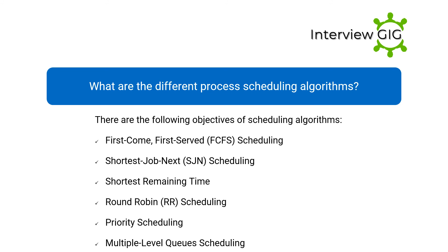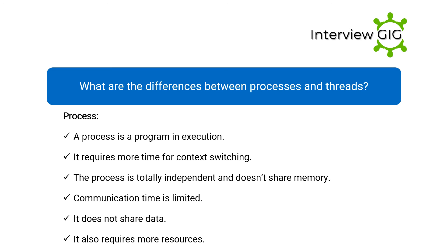What are the different process scheduling algorithms? The scheduling algorithms include: First Come First Served (FCFS), Shortest Job Next (SJN), Shortest Remaining Time, Round Robin (RR), Priority Scheduling, and Multiple Level Queue Scheduling.